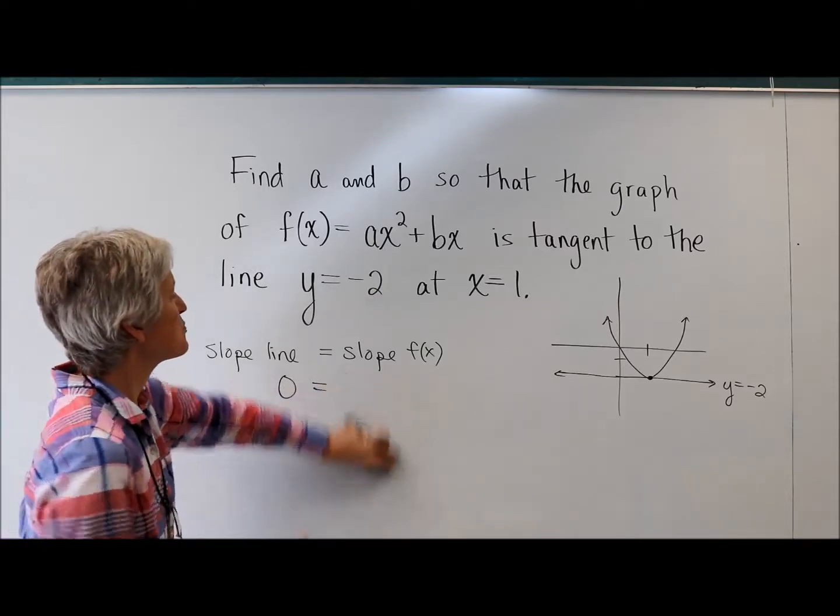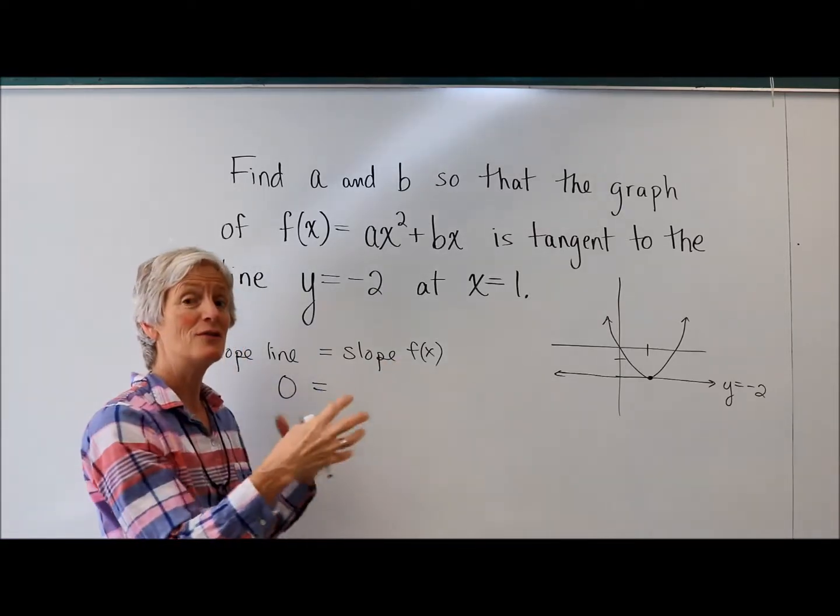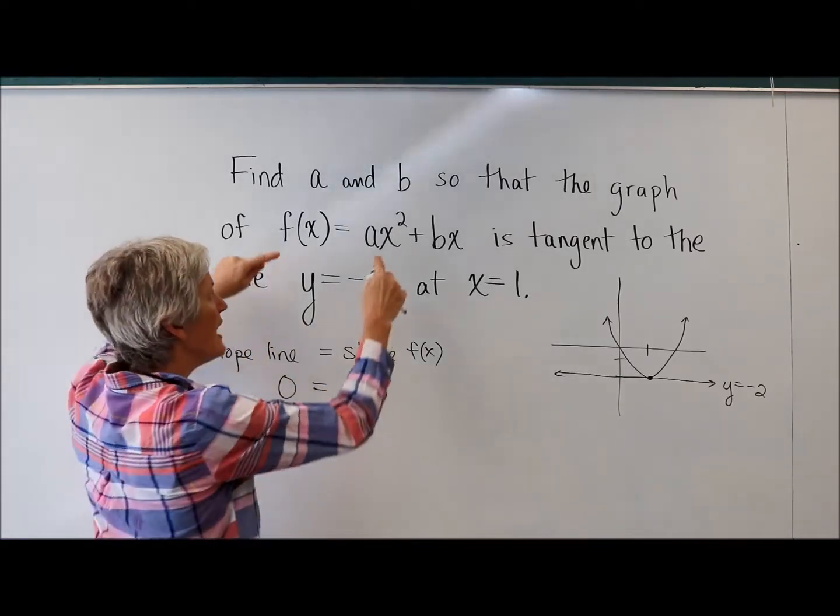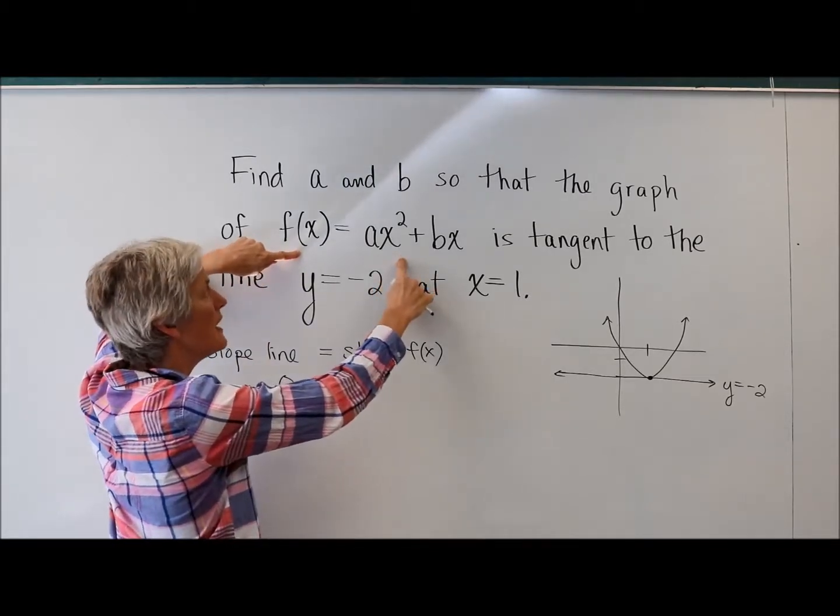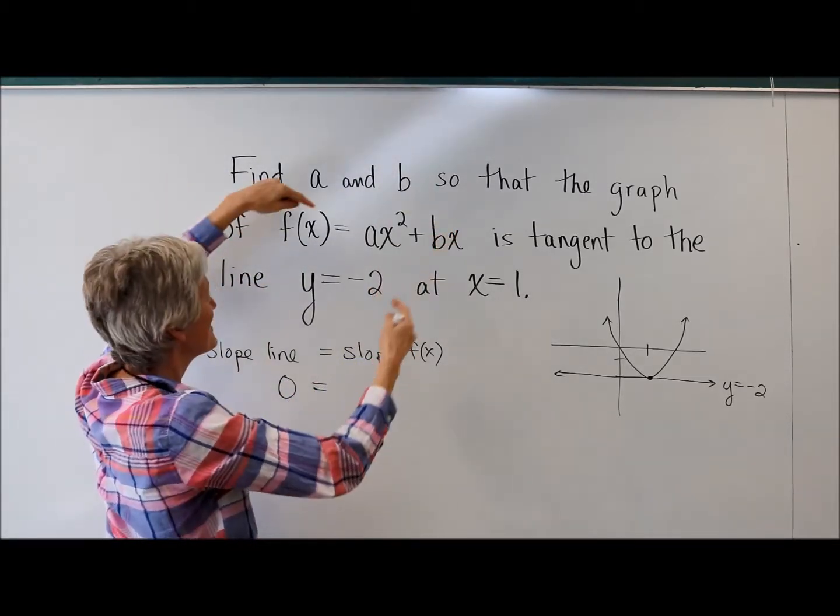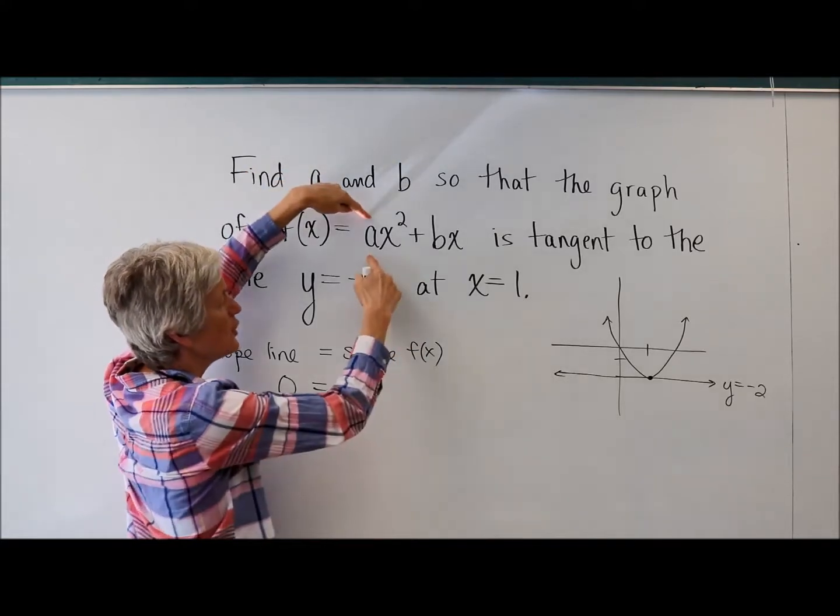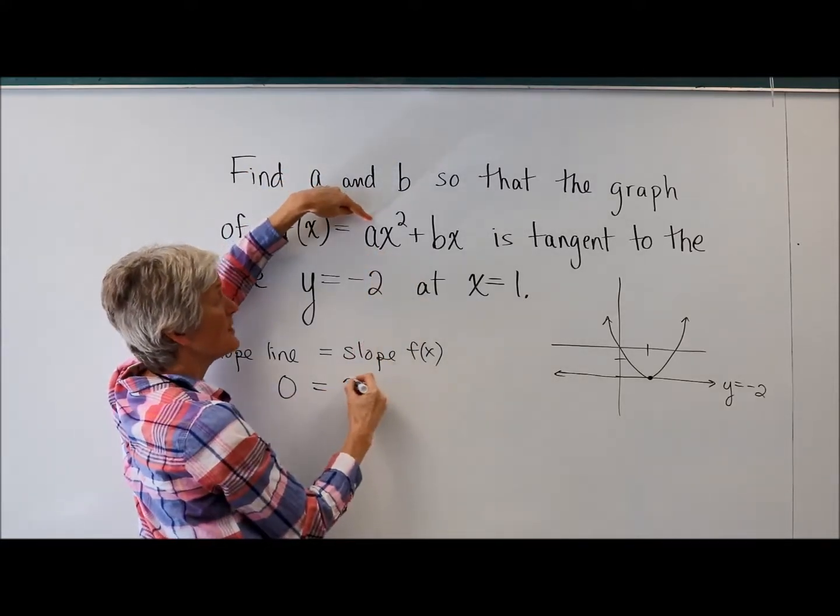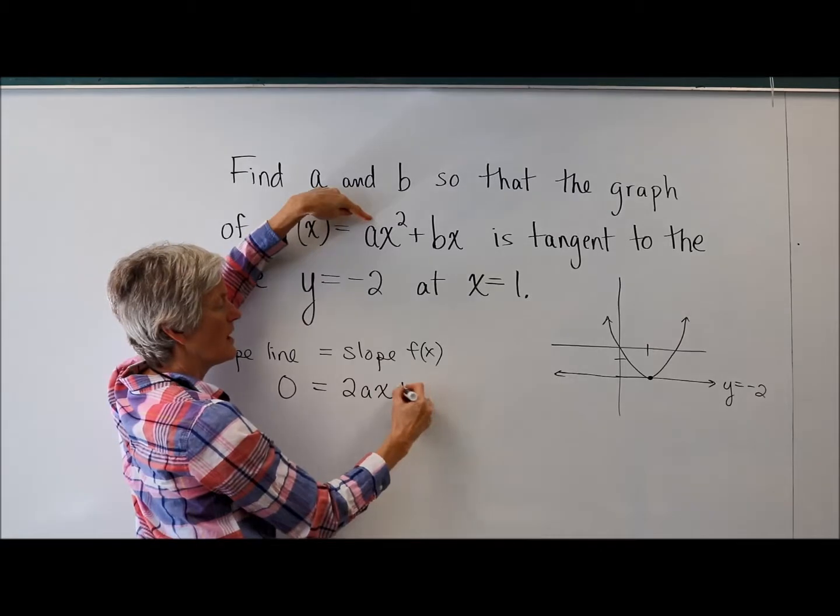So maybe what I can do is express the slope of f of x in another way. How can I express the slope of f of x? Well, you know how to find derivatives, I assume, right? So there we go. Let's take the derivative. The derivative of ax squared is going to be 2ax plus b.